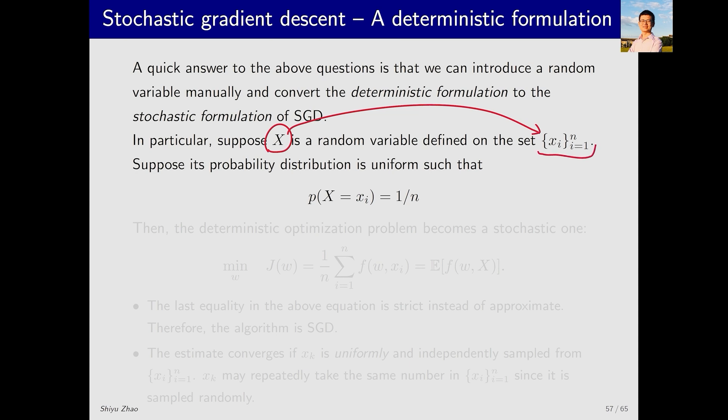However, we forcefully define a random variable such that it takes any value from {x_i} with a probability of 1/n, making it uniformly distributed over this set.